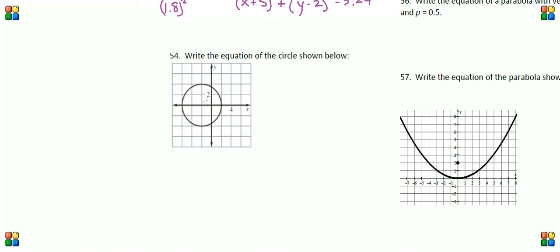When we're given the graph of a circle, all we need to know to find the equation are two things. What is the vertex? Sorry, not the vertex, that's a parabola. What is the center of the circle? Where is the center of the circle? And what is the radius of the circle? Once we know those two things, we can go ahead and find our equation.